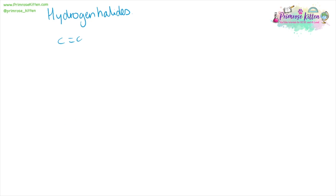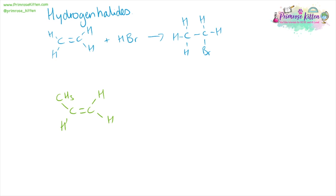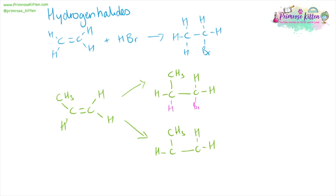If we are going to be adding a hydrogen halide across a double bond — for example, hydrogen bromide — then we can simply put one part on one carbon and the other part on the other carbon. For ethene, it doesn't matter which way round it goes. But if you add them in two different places for propene, it is going to matter because you're going to end up with two different products. The HBr could be added in one orientation or the other orientation, giving either 1-bromopropane or 2-bromopropane.